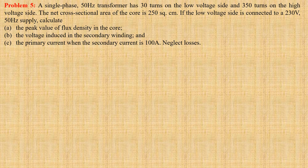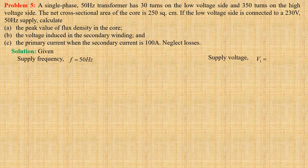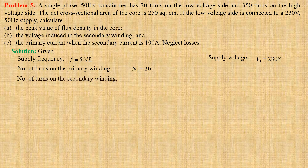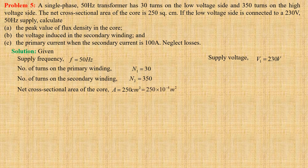Let us first write down the given data. Supply frequency F equals 50 Hz. Supply voltage V1 equals 230 volts. Number of turns on the primary winding N1 equals 30. Number of turns on the secondary winding N2 equals 350. Net cross-sectional area of the core A equals 250 cm², that is 250 × 10⁻⁴ m². Secondary current I2 equals 100 ampere.